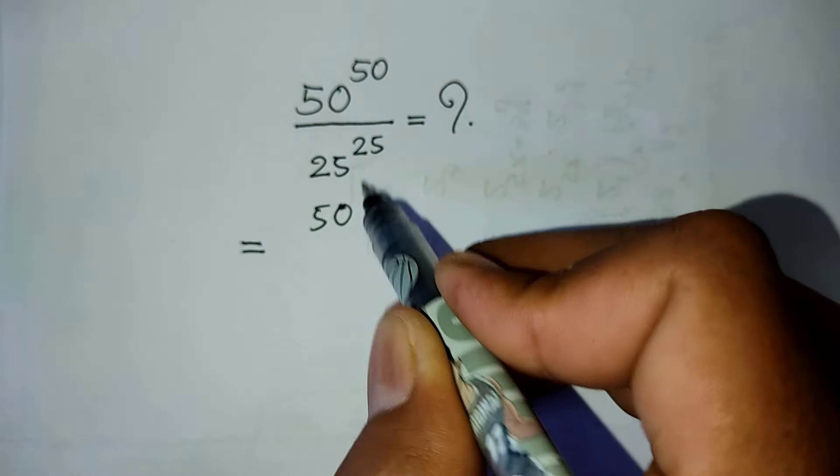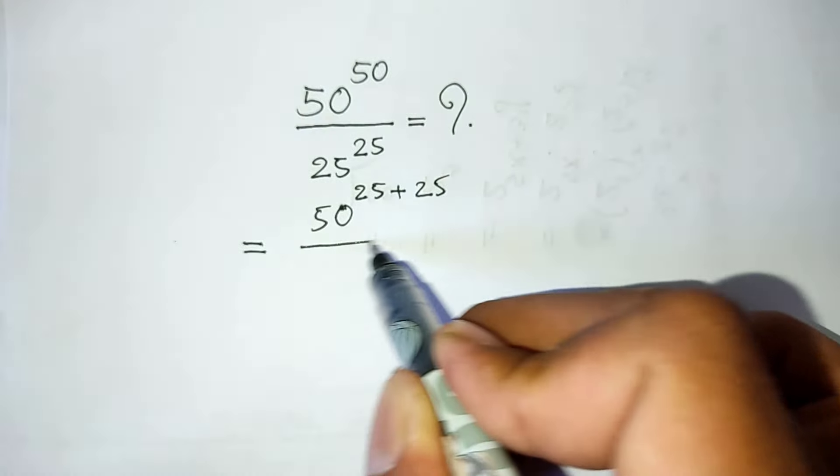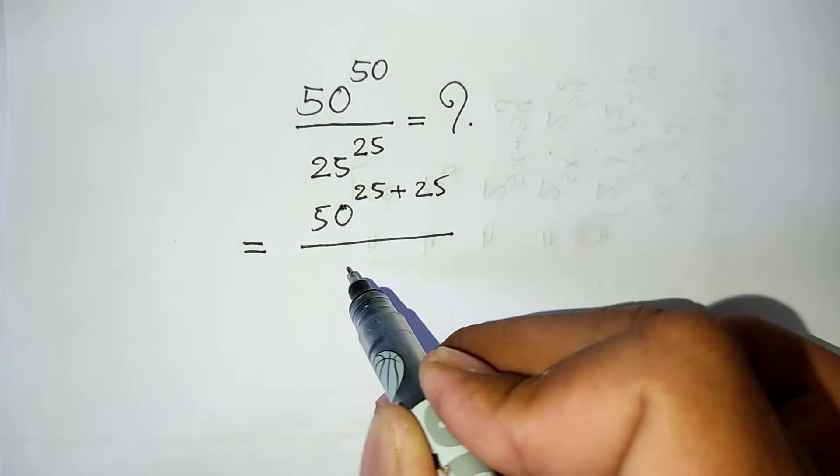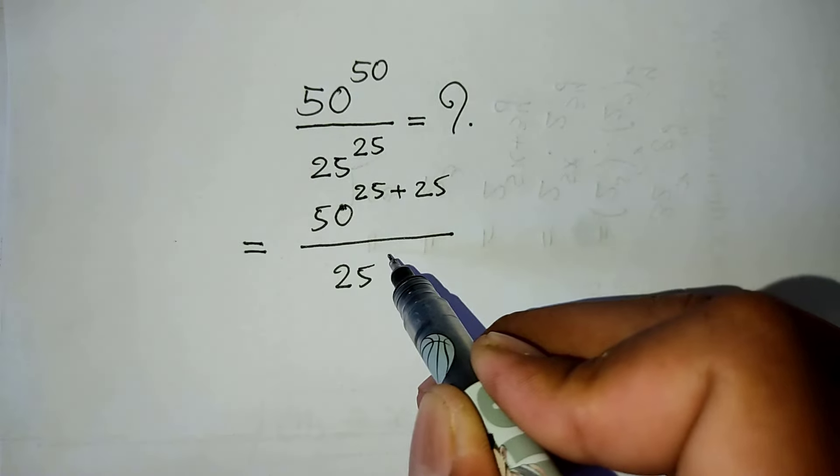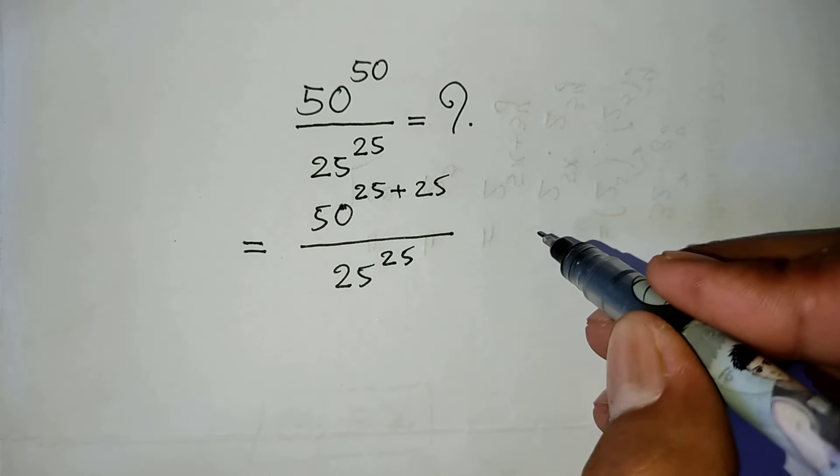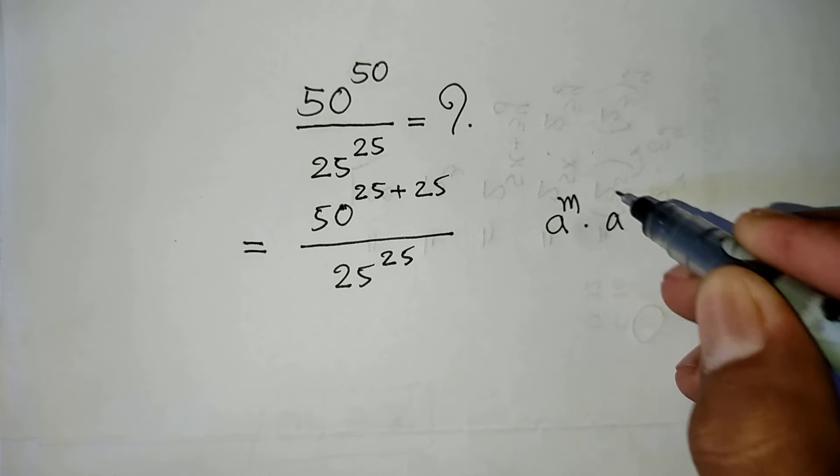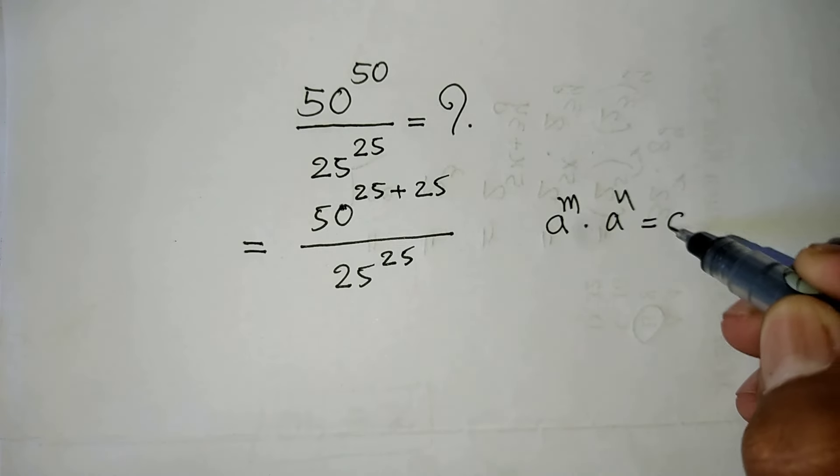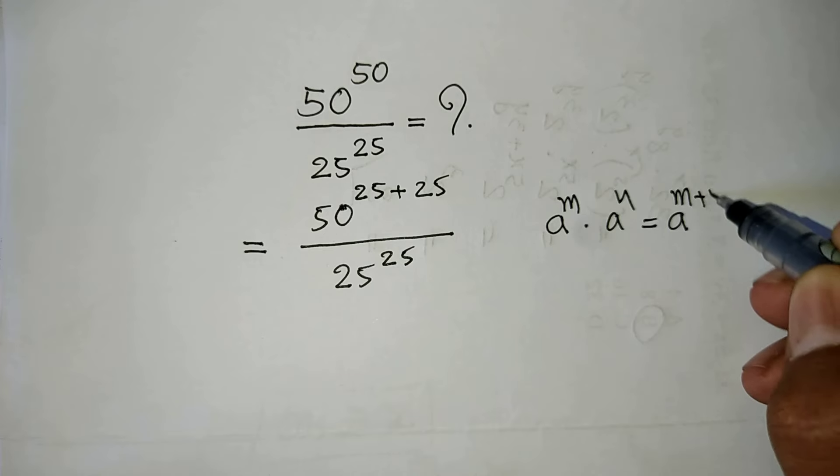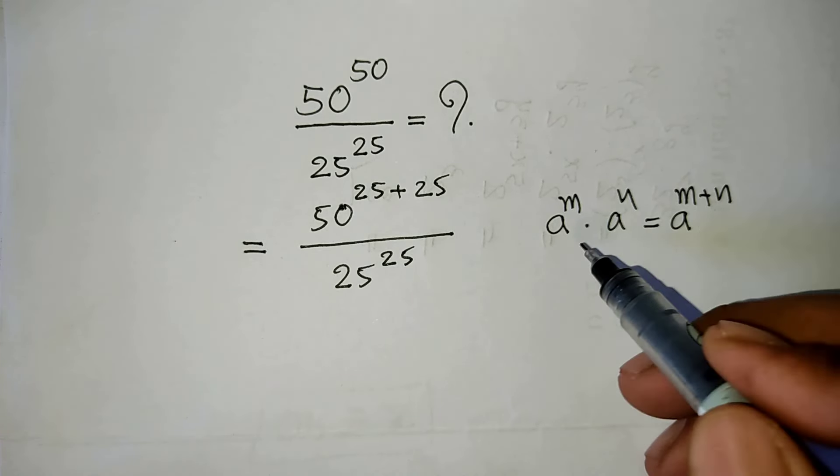I can write 50 to the power of 25 plus 25 and divide by 25 to the power of 25. Here we use the formula that a to the power m times a to the power n equals a to the power m plus n. Now we can derive this.